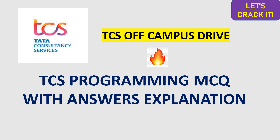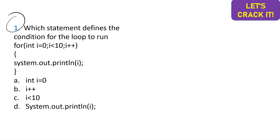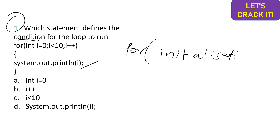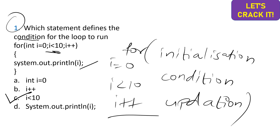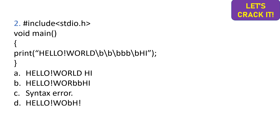Here comes our very first question. We are given a for loop in which we have System.out.println(i), printing the value of i. We are asked to find the statement which defines the condition for the loop to run. In any for loop there are three parts: initialization, condition, and updation. The condition statement is i < 10, so option C is the correct answer. Initialization is i = 0, condition is i < 10, and updation is i++.